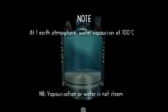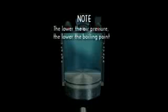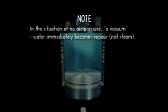At one earth atmosphere, water vaporises at 100 degrees centigrade. At half an earth atmosphere, it vaporises at about 60 degrees centigrade. The lower the air pressure, the lower the boiling point. In a situation of no air pressure — a vacuum — water immediately becomes vapour.